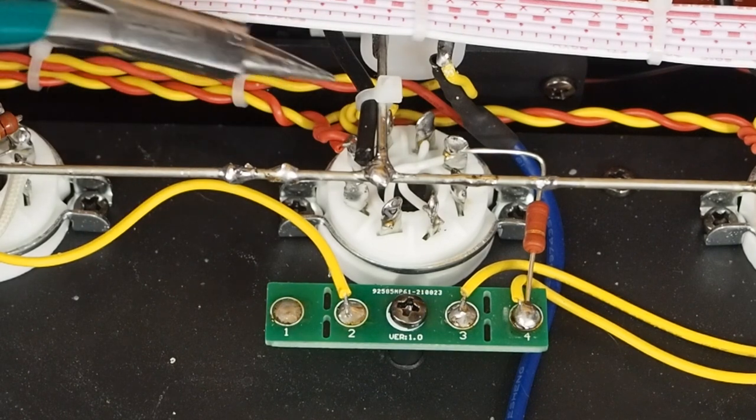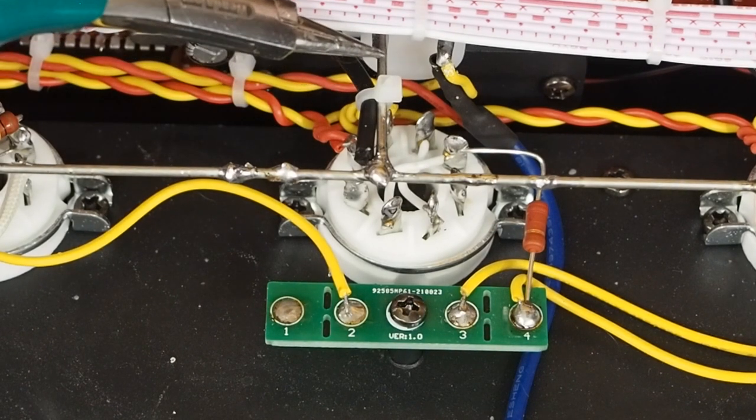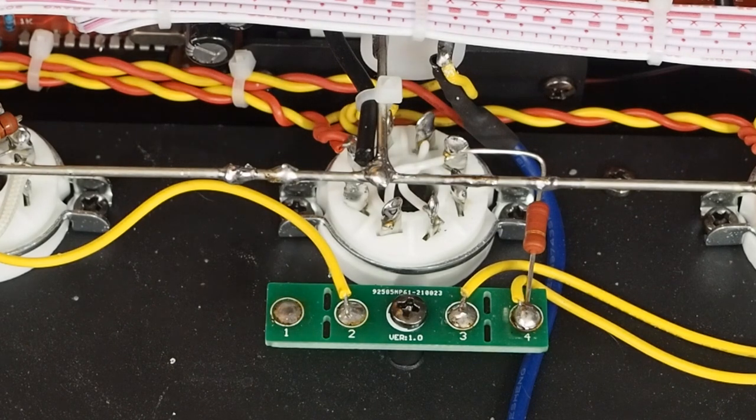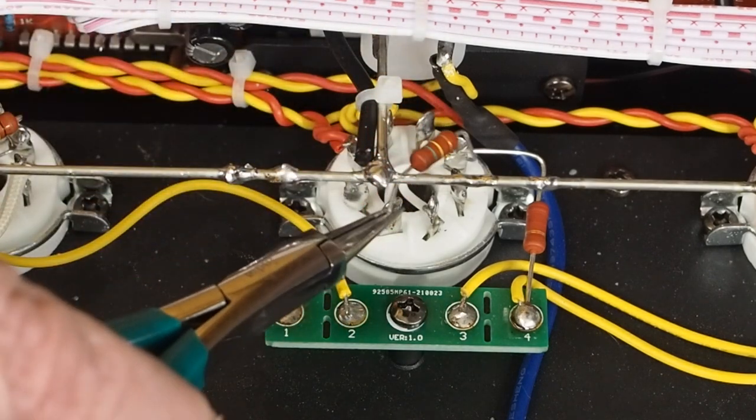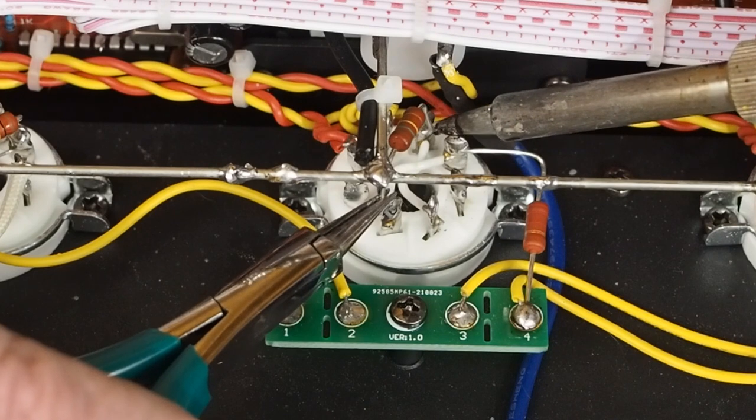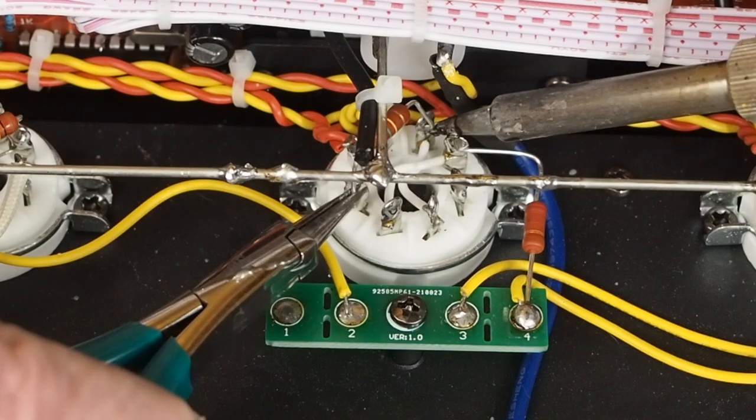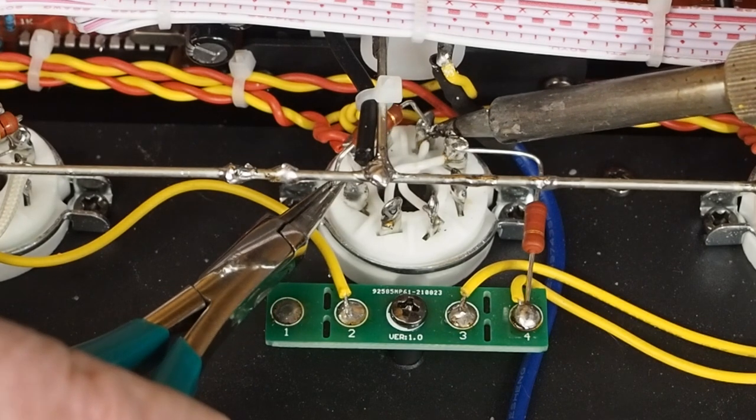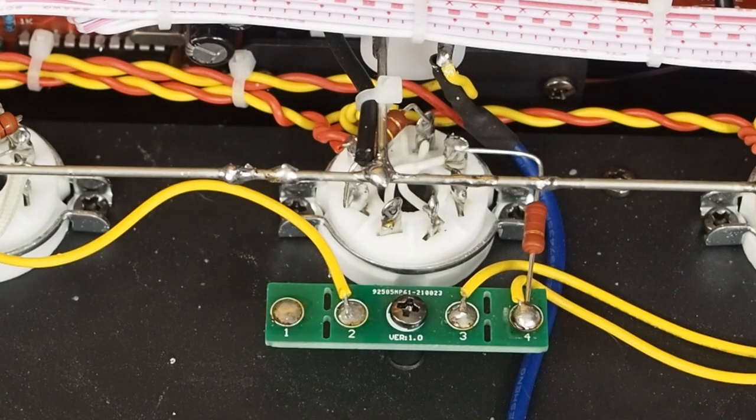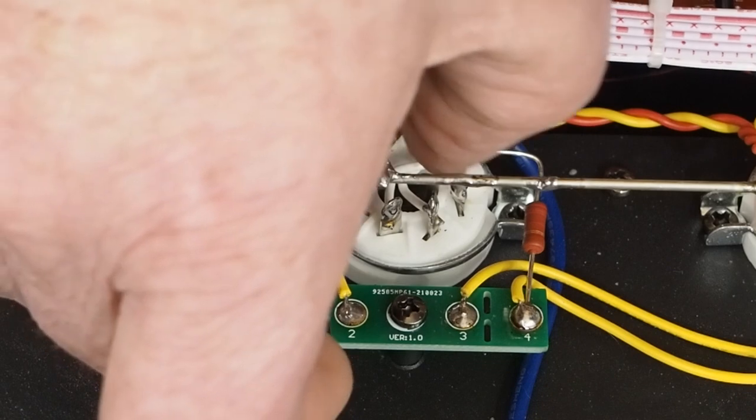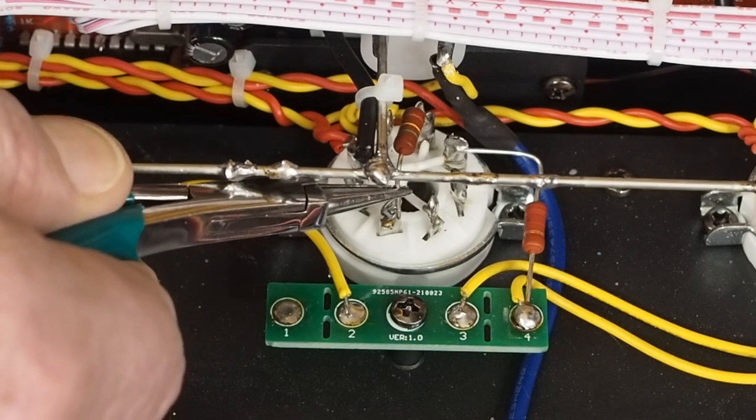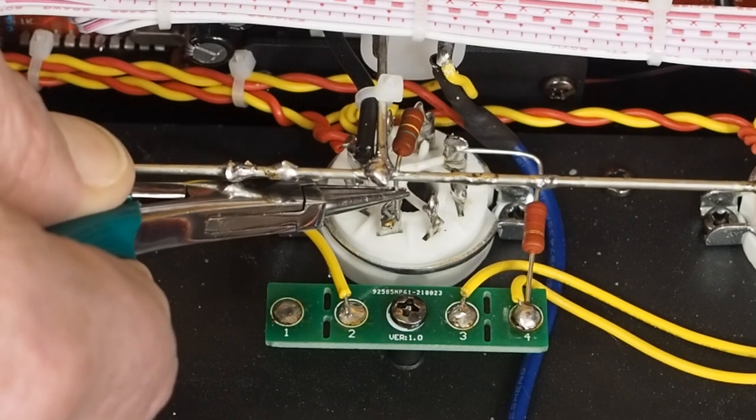So the next thing we need to do is we need to put the 150k resistor back in place that creates the voltage divider and again this is one of the trickier little parts to pop in here. Just be careful you don't burn any of the wiring around this. This is back when the old game operation that we played as a kid kind of comes in handy. And that's connected to pin one and this is connected to pin five, the other end of it.